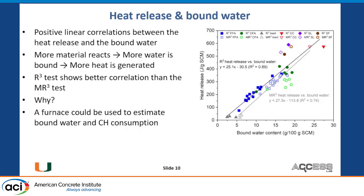How does the bound water look? There's a pretty nice correlation between heat release and bound water, and this correlation exists for both the R3 and the modified R3 tests. You could also use a furnace to estimate bound water and calcium hydroxide consumption — essentially a two-step furnace where you heat from about 100°C to 380°C and then from 380°C to 550°C to get calcium hydroxide consumption using the furnace mass loss. If you want to use a bound water number, 3 to 5% bound water is a good differentiator between reactive and unreactive materials.